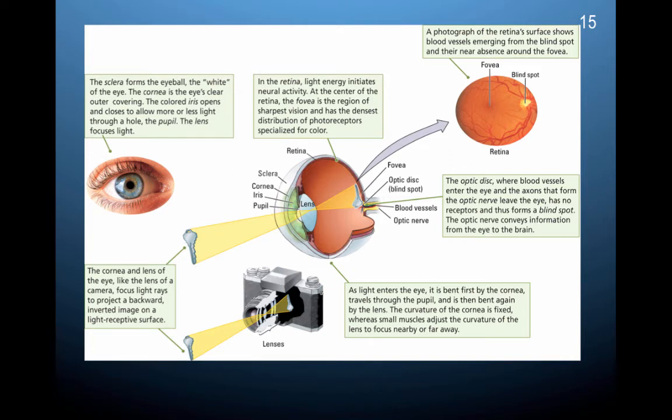We're going to go through some of the basic points of the eye. So the sclera forms the eyeball, the white of the eye. The cornea is the eye's clear outer covering. And the colored iris opens and closes to allow more or less light. This would be the pupil, sort of the pupil dilation. And the lens then in turn focuses the light. The cornea and the lens of the eye act like a camera. They focus light rays to project a backward, inverted image of a light receptive, on a light receptive surface. So in an early camera, of course, the light receptive surface would be film. And for our eyes, the light receptive surface is the retina.